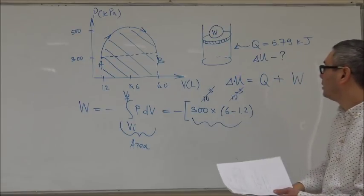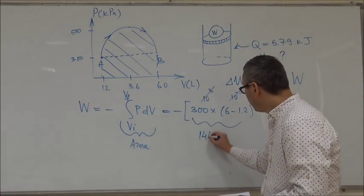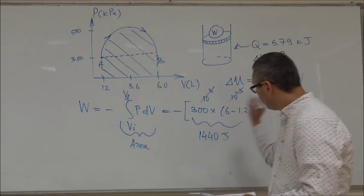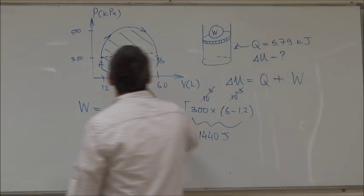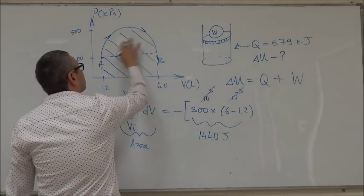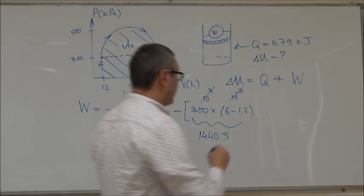Okay, so this is how much is the rectangle. Now the question is how do we calculate the area of that circular part? Let's call it A₀, so let's call this circular part A₀, so plus A₀.